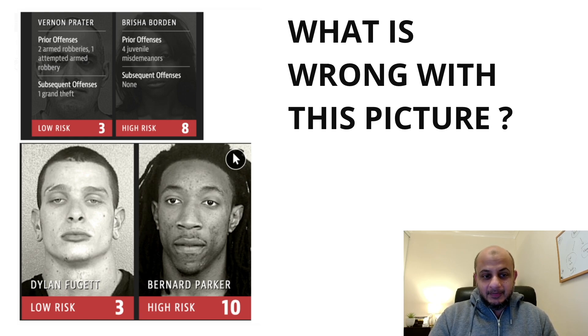If you look at this picture, on the left, this Dillon guy, he had prior offenses, armed robberies, attempted armed robbery, so much more. He was categorized as a low risk. And on the right guy, this poor person, Bernard, he had just very small minor crimes, but he was categorized as the highest risk. Why? Because the AI model was fed and it started making judgments and discriminating against people based on skin color.